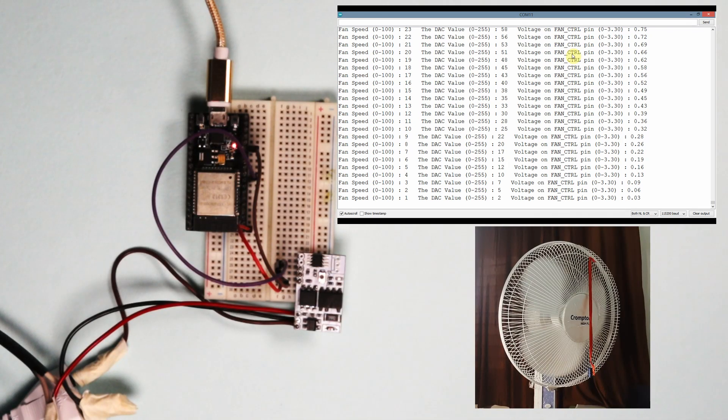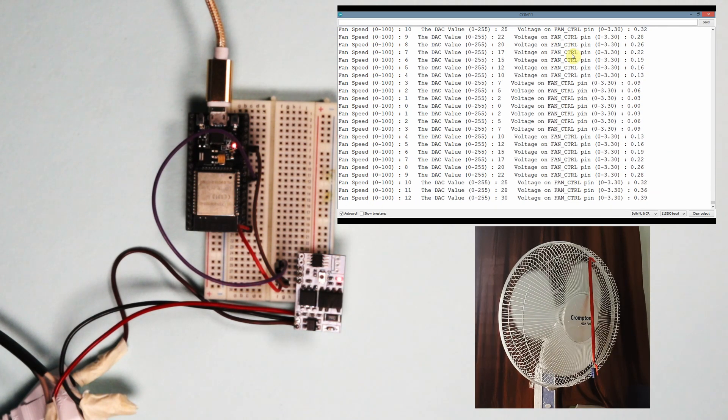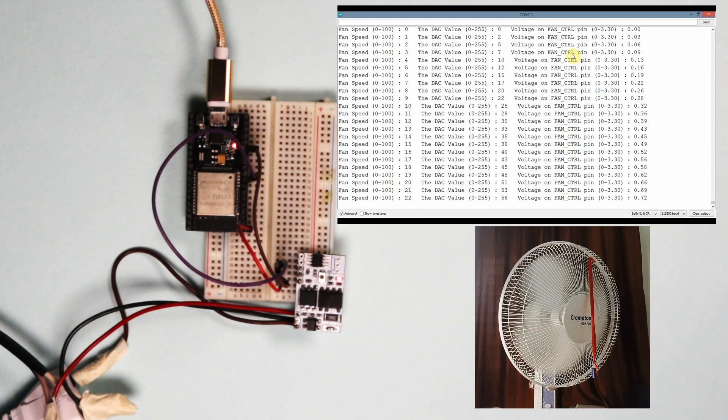Here, the second demo. In it the configuration is the same as earlier. We have replaced the filament bulb with the fan. All the connections and the sketch are the same as the previous demo.